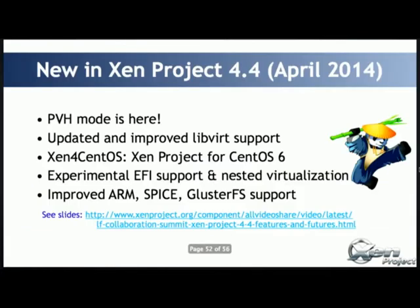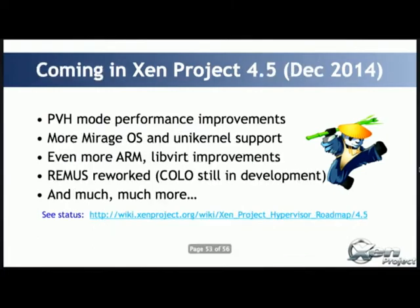What's next? The last release of Xen project was in April 2014 — Xen 4.4. This release introduced PVH, improvements to libvirt, and we also released Xen for CentOS at the same time so you can download the CentOS ISO and directly start Xen and try it live. We started to have experimental support for UEFI and nested virtualization — you can run Xen on KVM in your guest. That was also the first release where we officially support ARM. We also added Spice and GlusterFS support. The next release will be in December with a six to nine month release cycle.